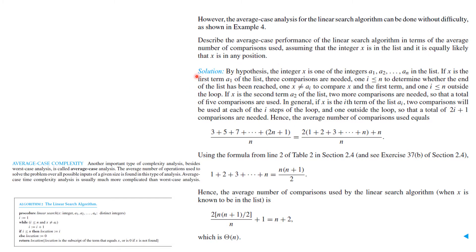By hypothesis, x is one of the integers in the list. If x is the first term, three comparisons are needed: one to check i ≤ n, one to check whether x ≠ a_i, and one outside the loop. If x is the second term, two loop iterations give five comparisons. In general, if x is the i-th term, two comparisons are used at each of the i steps plus one outside the loop, giving a total of 2i + 1 comparisons.